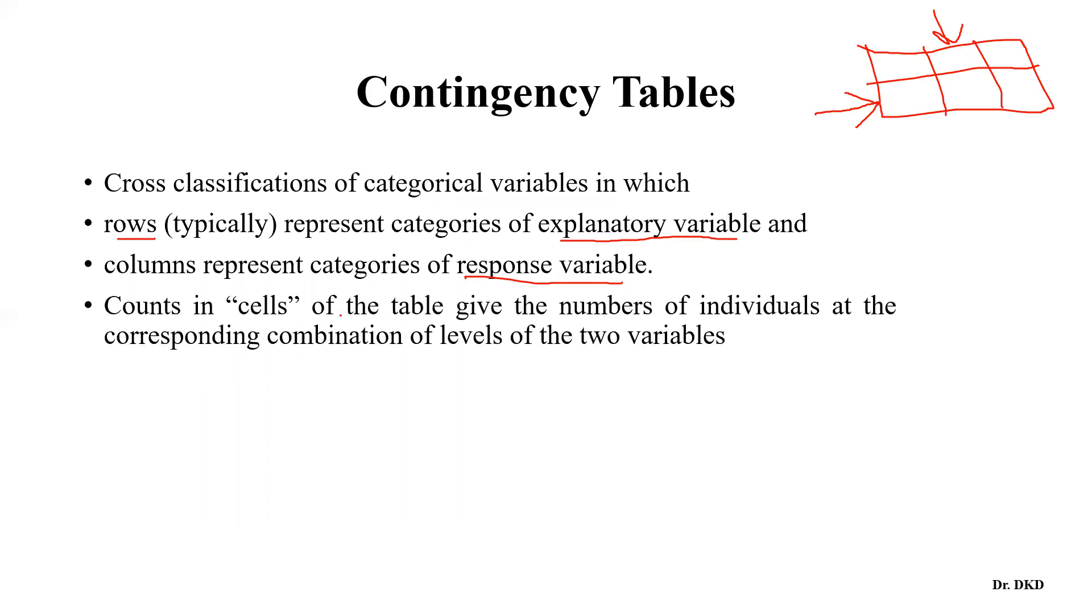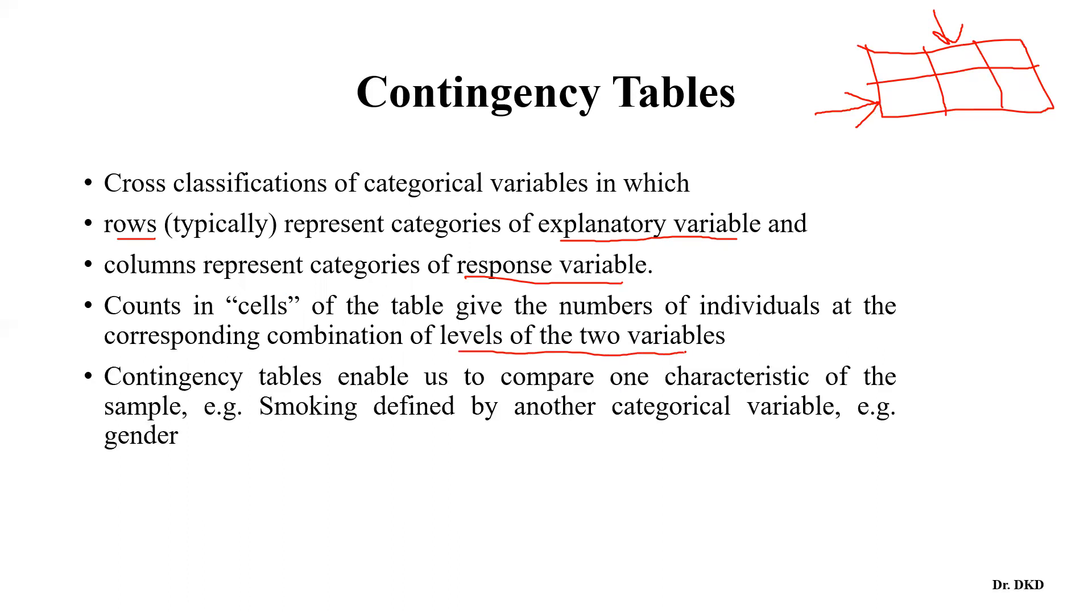Now counts in cells of the table give the number of individuals at the corresponding combination of levels of the two variables. And contingency tables enable us to compare one characteristic of the sample.